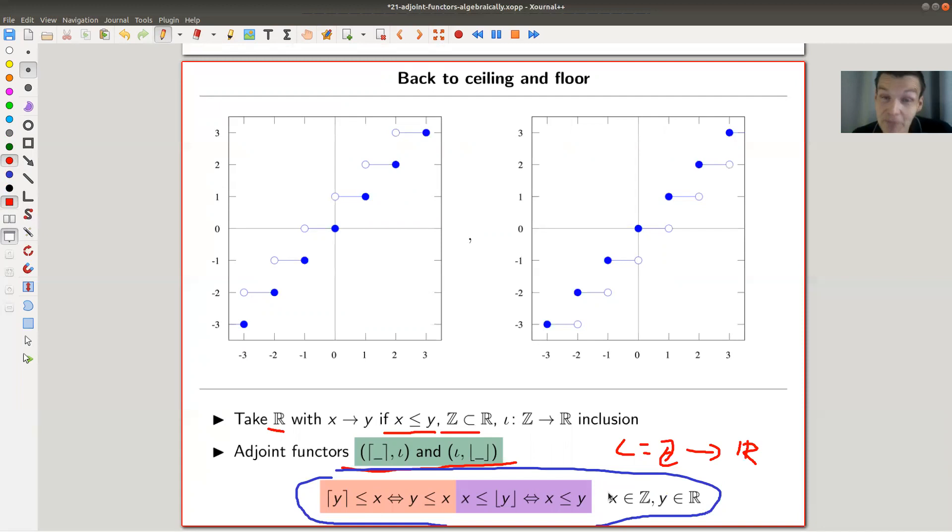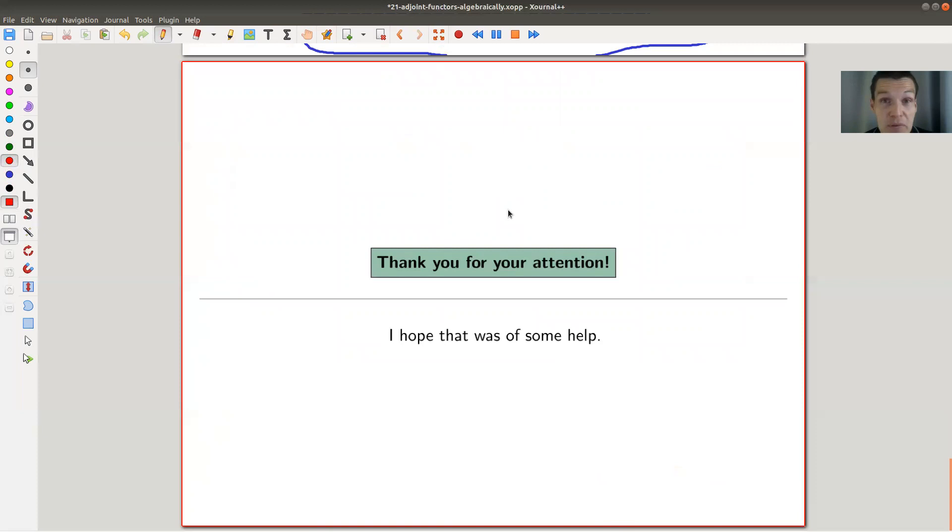So ceiling and floor function are not just approximate inverses, they are approximate inverses in the sense of adjoint functors. So adjoint functors, first motivation for adjoint functors, they generalize inverses or equivalences. And of course, then they have to be important.